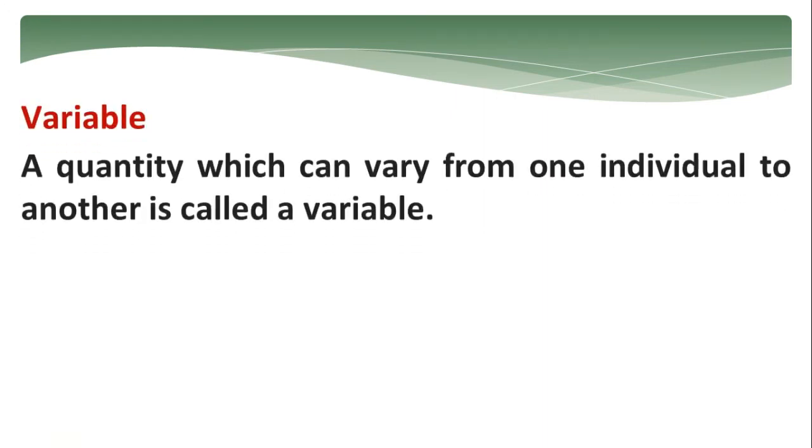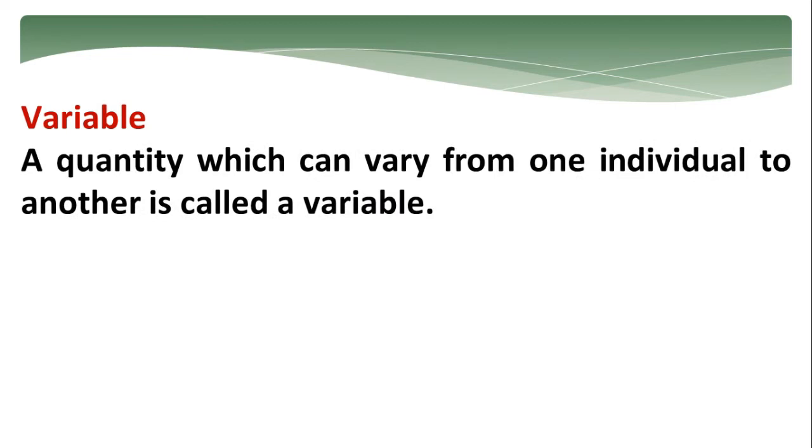Variable. What is a variable? Variable is a quantity which can vary from one individual to another. For example, height, weight, age. If you collect the information of the students in your class of their height measurement, it may or may not be same. Such quantity, the collected information, is called as a variable.